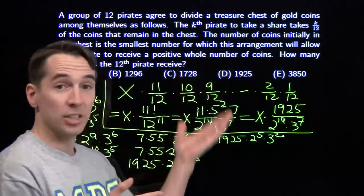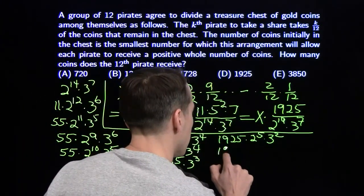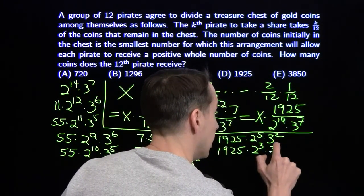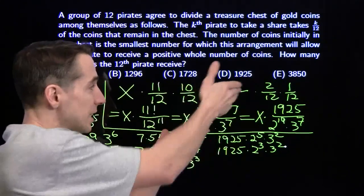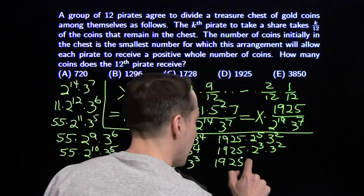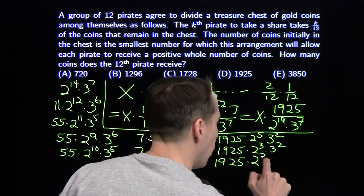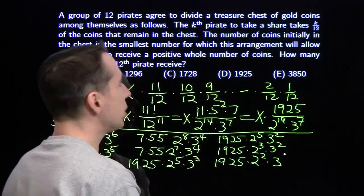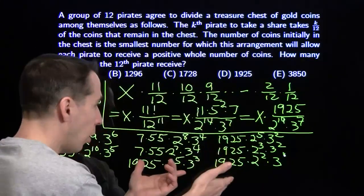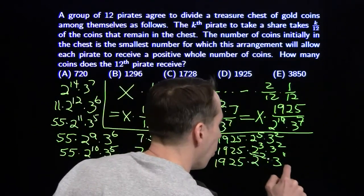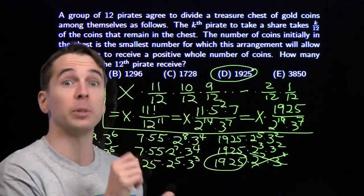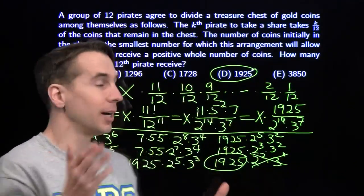Almost there. The ninth pirate takes 3/4, leaves 1/4 of this amount. The tenth pirate takes 10/12, leaving 2/12 (1/6) of this amount. As you can see, at each step the pirate walking away with the loot is getting an integer number of coins. Finally, the 11th pirate takes 11/12, which works out fine, and leaves 1/12 remaining — which is 1925 coins. So if you had just bubbled D and moved on, it all worked out just fine.